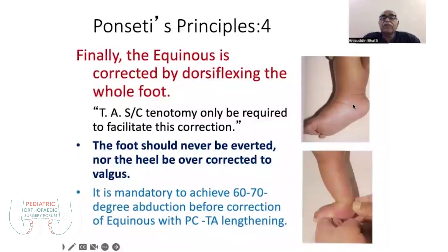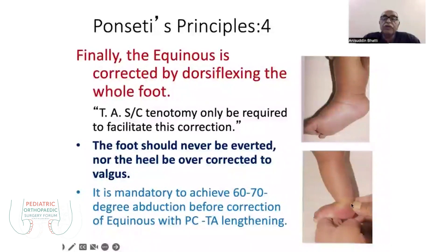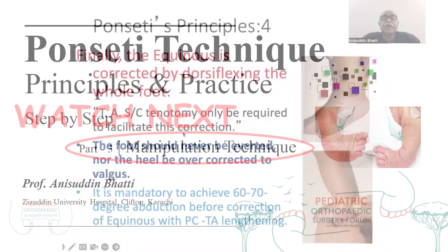Some degree of heel equinus is also corrected. Finally, you have to correct the equinus by dorsiflexion of the whole foot, not only the forefoot. If you dorsiflex the forefoot only, you may produce a rocker bottom foot. Therefore, the dorsiflexion movement should involve the complete foot. In more than 80 to 90% of cases, because of rigid fibrous tissue in the Achilles tendon, a tenotomy is needed.